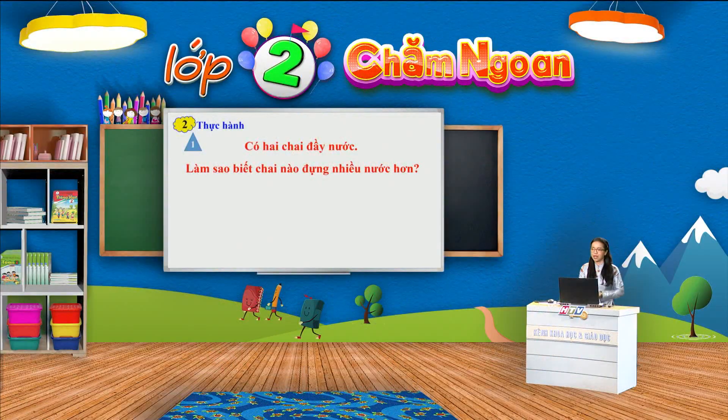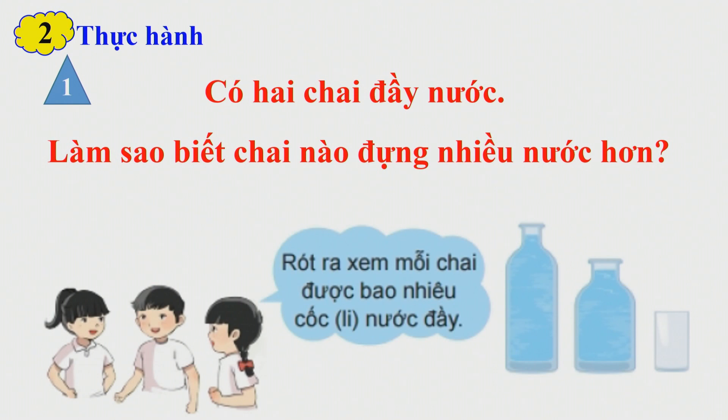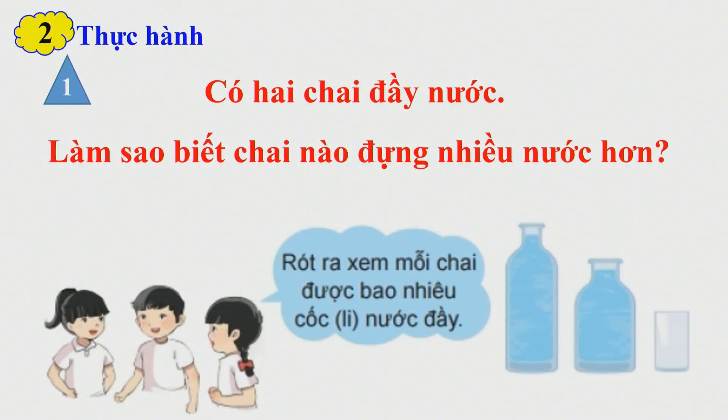Được không nào các em? Nếu đã nắm được hoạt động thứ nhất rồi thì cô mời các em cùng đến với hoạt động thứ 2. Chúng ta sẽ thực hành. Phần thực hành đưa ra yêu cầu: có 2 chai đầy nước, làm sao biết chai nào đựng nhiều nước hơn? Cô có 2 chai trên màn hình đựng đầy nước. Các bạn nhỏ hướng dẫn chúng ta sẽ sử dụng một cái cốc, rót ra xem mỗi chai được bao nhiêu cốc nước đầy. Nghĩa là chúng ta sẽ lần lượt rót chai thứ nhất vào đầy cốc, xem được bao nhiêu cốc, rồi tiếp tục đổ nước ở chai thứ 2, xem chứa được bao nhiêu cốc. Nếu chai thứ nhất đổ được đầy nhiều cốc hơn thì chai thứ nhất sẽ là chai đựng nhiều nước hơn.